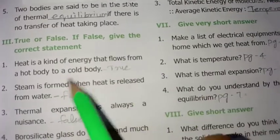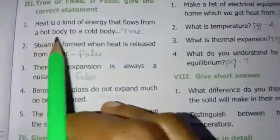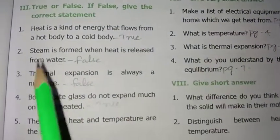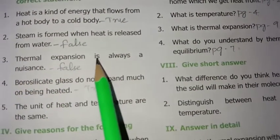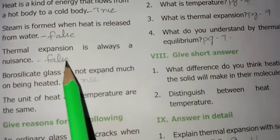If false, give the correct statement. Heat is a kind of energy that flows from a hot body to a cold body - true. Steam is formed when heat is released from water - false. Thermal expansion is always a nuisance - false.